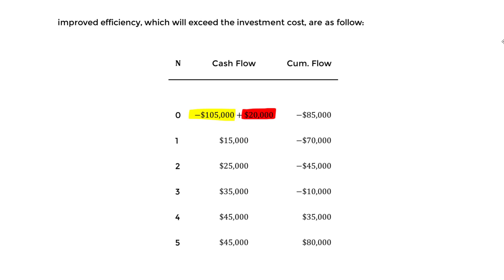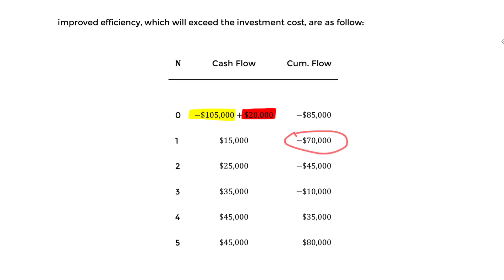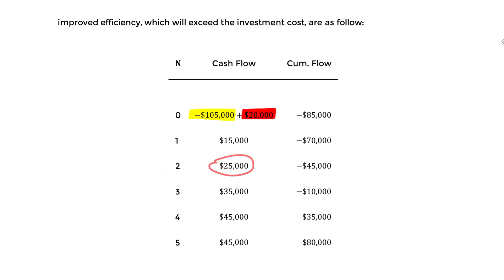We're still negative at year zero, so we haven't hit the payback period yet. At year one, the cash flow is $15,000, so the cumulative becomes negative $85,000 plus $15,000 equals negative $70,000. At year two, the cash flow is $25,000, so cumulative becomes negative $70,000 plus $25,000 equals negative $45,000. We keep going through the years.